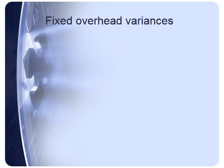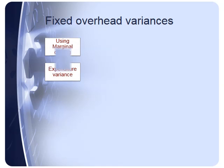The first thing to note about fixed overhead variances is that the variances we can calculate depend on whether we're using marginal costing techniques or absorption costing techniques. With marginal costing, our fixed overheads are very straightforward. We simply have one variance that we can calculate, and that's our fixed overhead expenditure variance. The reason it's so simple is because with marginal costing we just treat fixed overheads as a period expense and don't include any element of fixed overheads in our unit product costs.